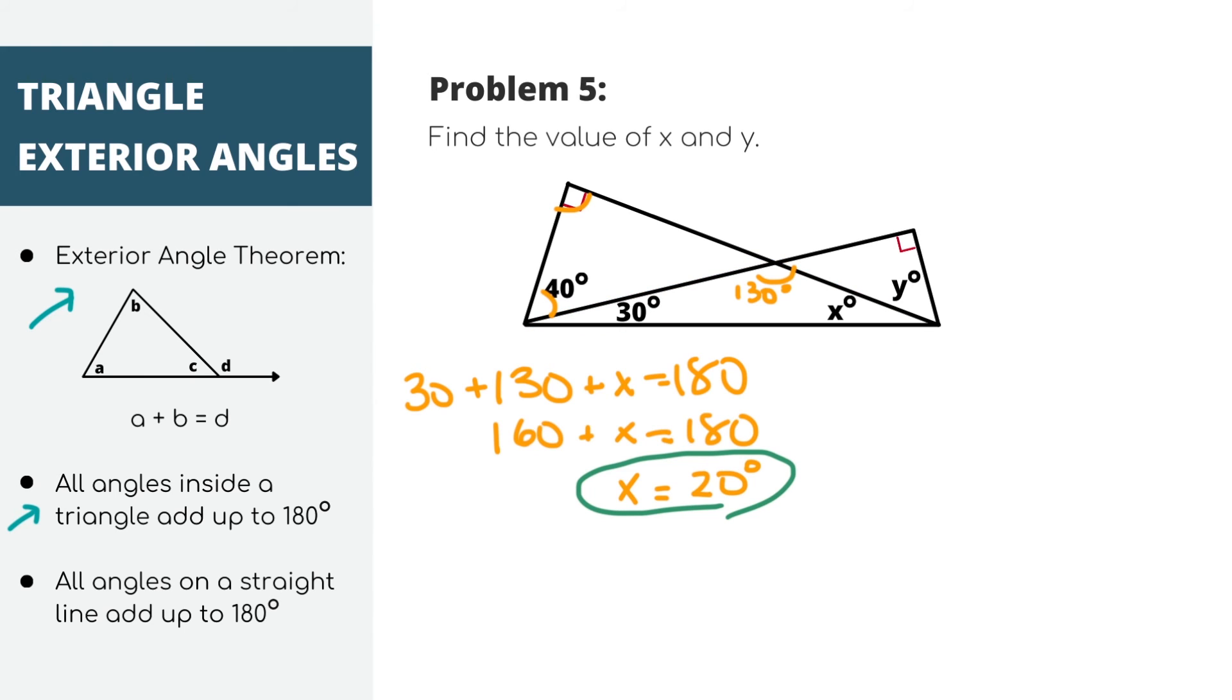Now to find y, you can use the exterior angle theorem again because this is another triangle with a tail, right? So these two interior angles add up to 130. For this problem, we can say that 90 plus y equals 130. And y equals 40. And now we have both the values of x and y, which is our final answer.